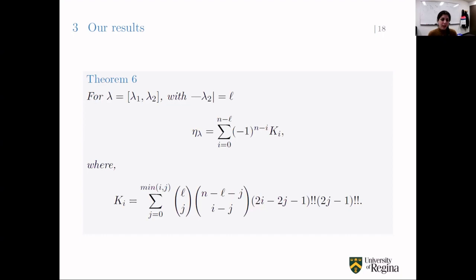The last result we have so far is for partitions with only two parts: lambda_1 and lambda_2 where lambda_2 has size L. The eigenvalue in this case is of the form where K is a specific summation.